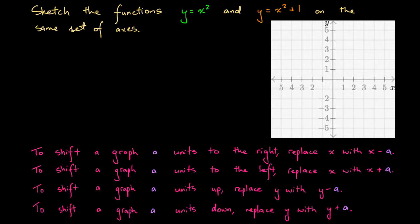To shift a graph a units up, we replace y with y minus a. Whereas to shift a graph a unit down, we replace y with y plus a. This may seem the opposite of what you might think — you might think that to shift it up, we replace y with y plus a — but the rule is in fact: to shift a units up, replace y with y minus a, and to shift a units down, replace y with y plus a.